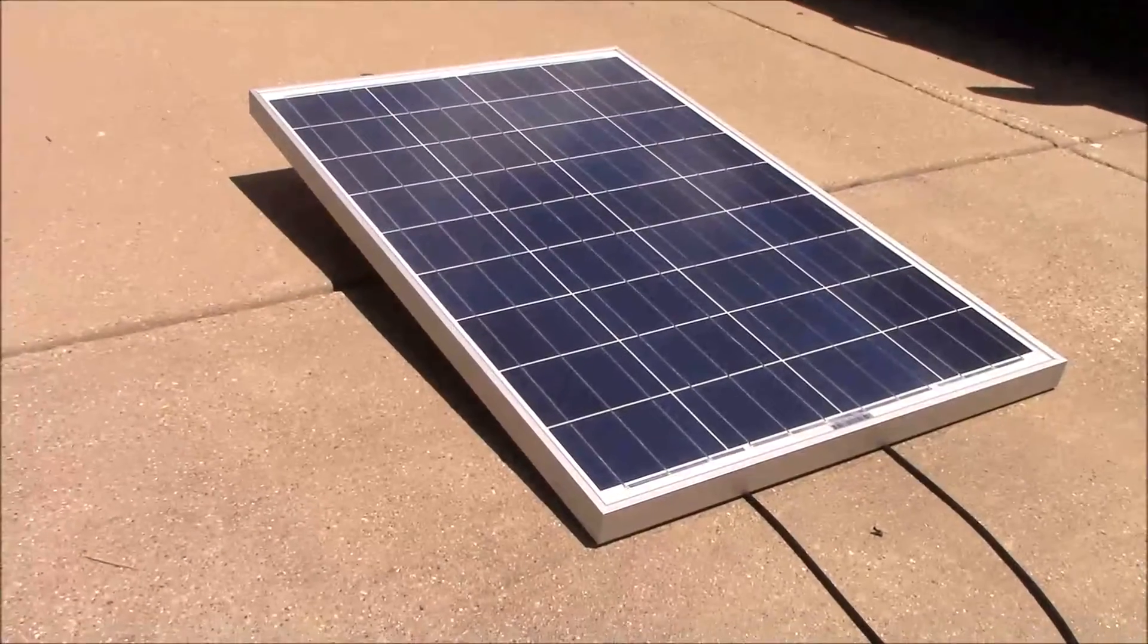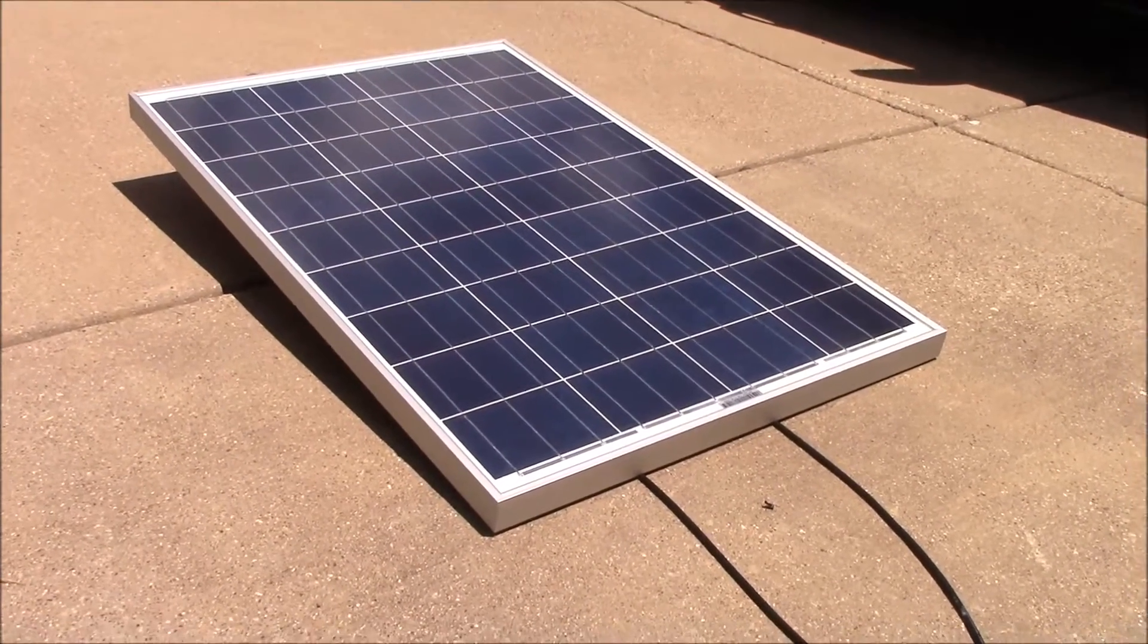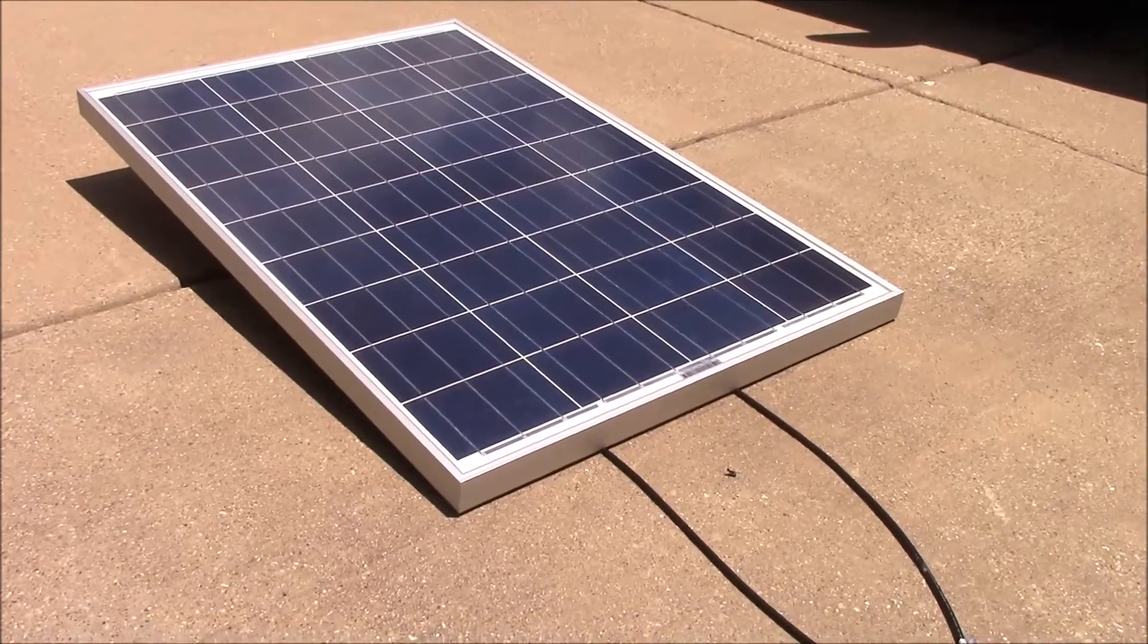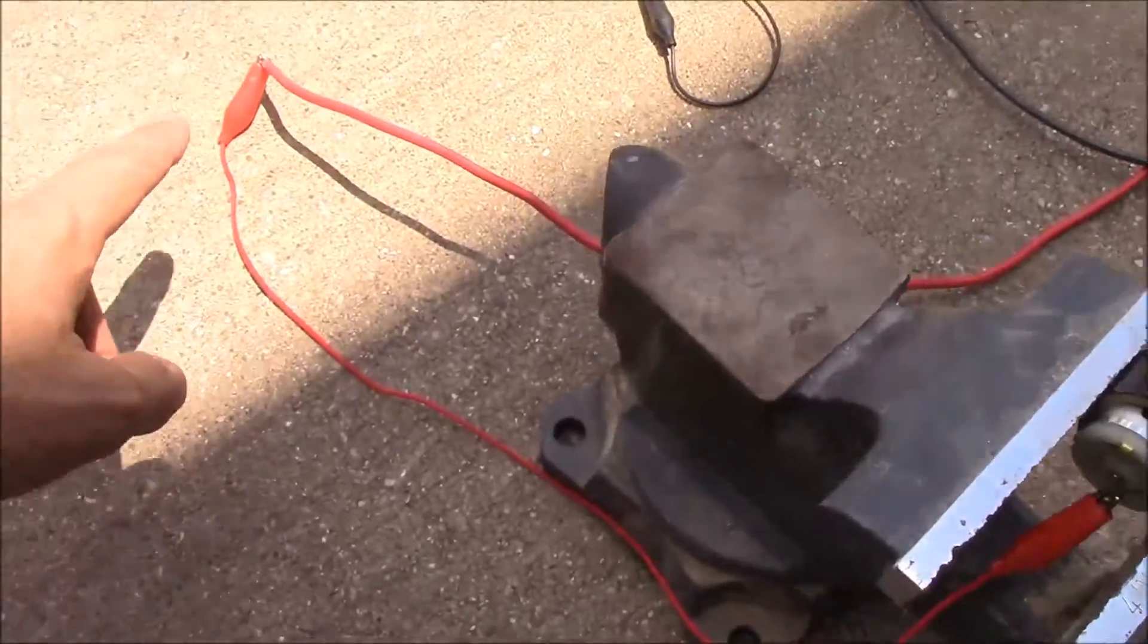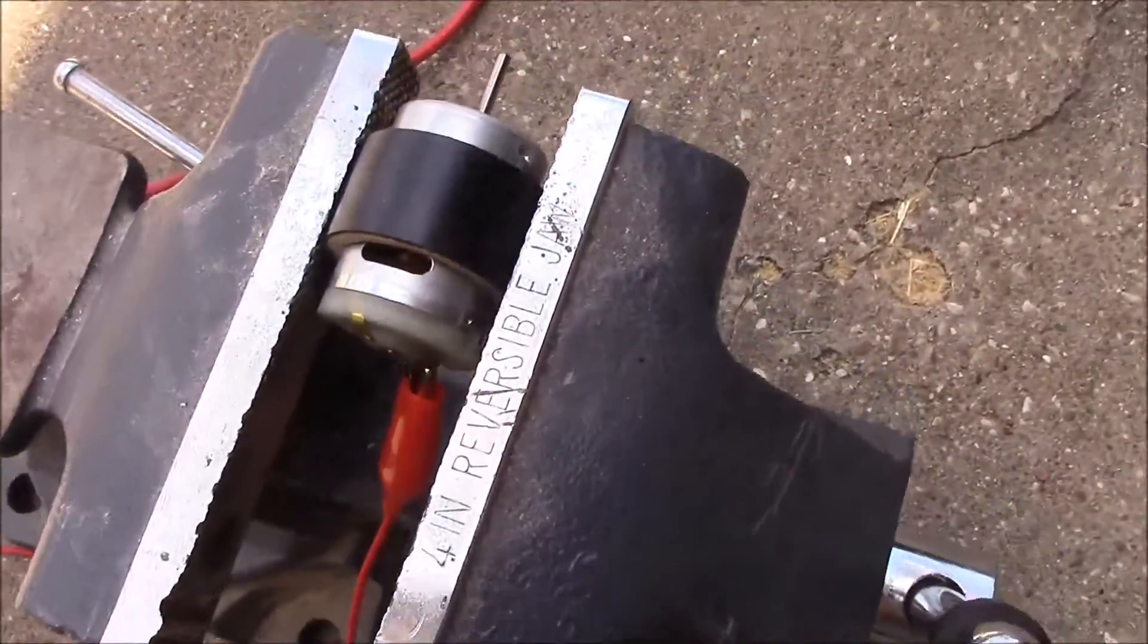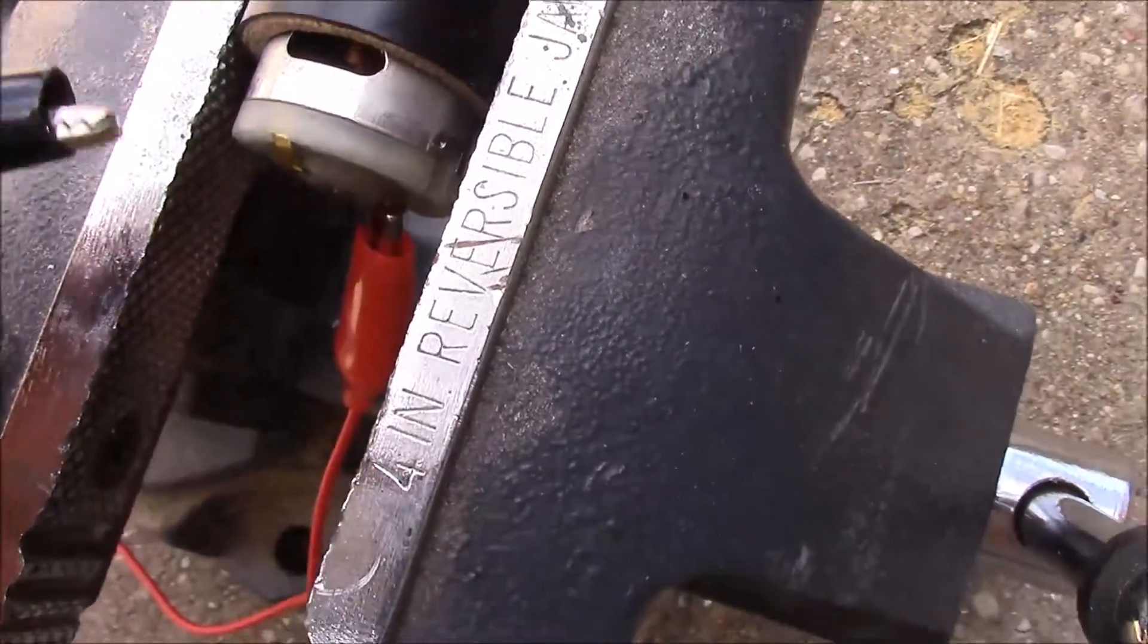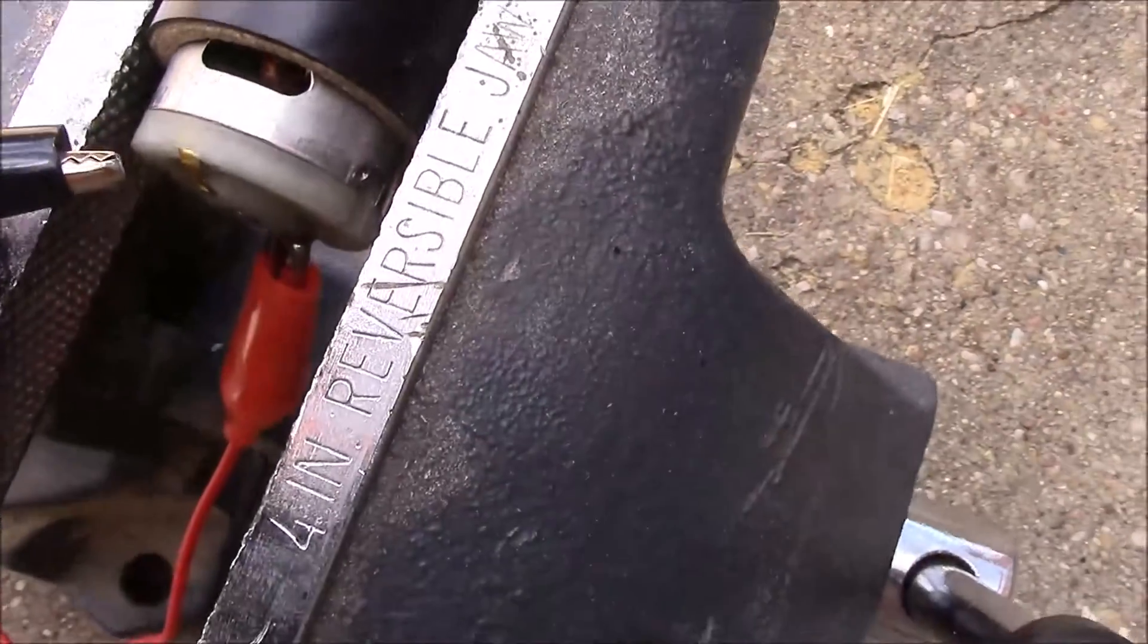In this case, we're going to run this directly off of the solar. We got direct sunlight today. It's about a little afternoon. So let's go ahead and test this out, see what happens. We've got our positive lead already connected. So let's zoom in here and find out what happens when we connect the negative lead here.